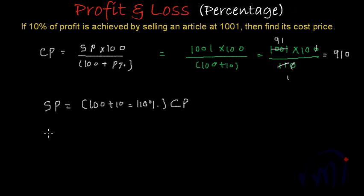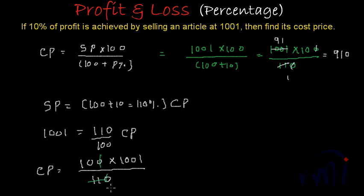So sale price over here is 1001 and this will be actually equal to 110%, that is 110 by 100, of cost price. So from here cost price will be equal to 1001 multiplied by 100 divided by 110. Again you have reached to the same expression, and if I solve it: 11 ones are 11, 11 nines are 99 and 11 ones are 11.